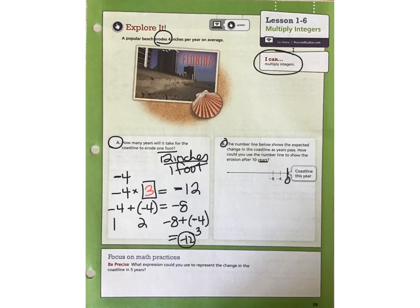If 0 represents the coastline this year, then we could repeatedly add groups of negative 4 until we got 10 years down the road. There's 7, and I would have to expand this. 8, 9, 10. So, the question is, what number is this point right here on the number line?